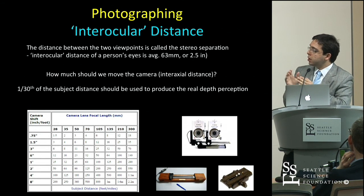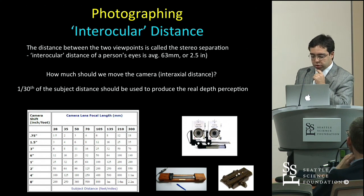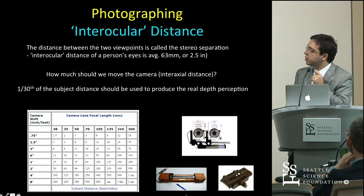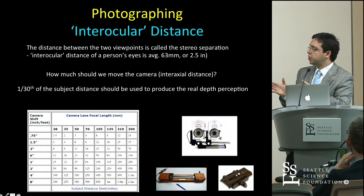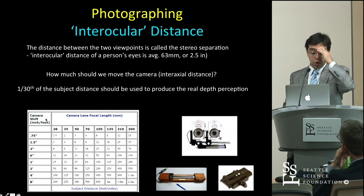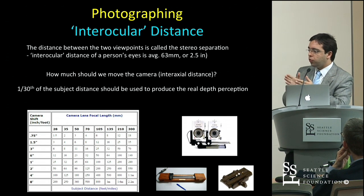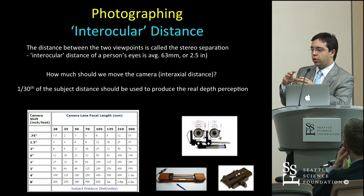When getting images for 3D photography, you need to get two images. You take one picture, then slide the camera and take the second picture. This is traditionally done with sliding bars. The question is how much you move your camera — there are charts, but a well-known rule is to move one-thirtieth of the distance to your subject. If you move one-thirtieth of that distance, it will capture the real depth of the scene.